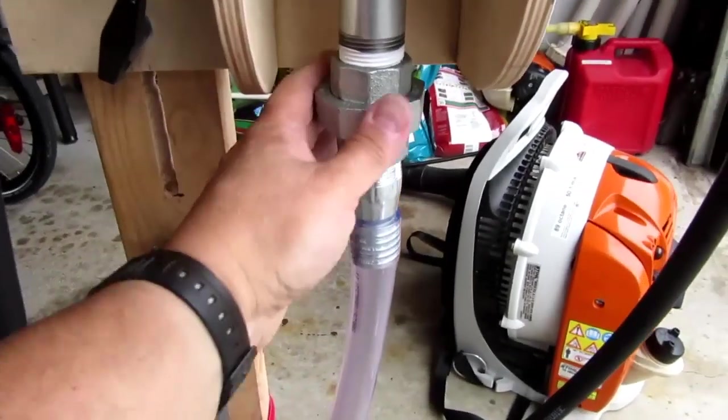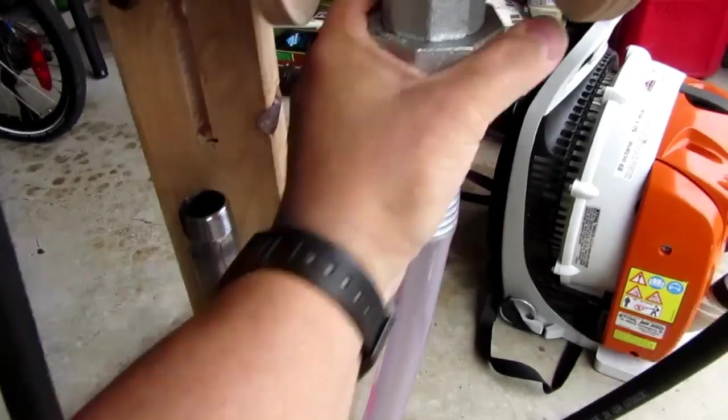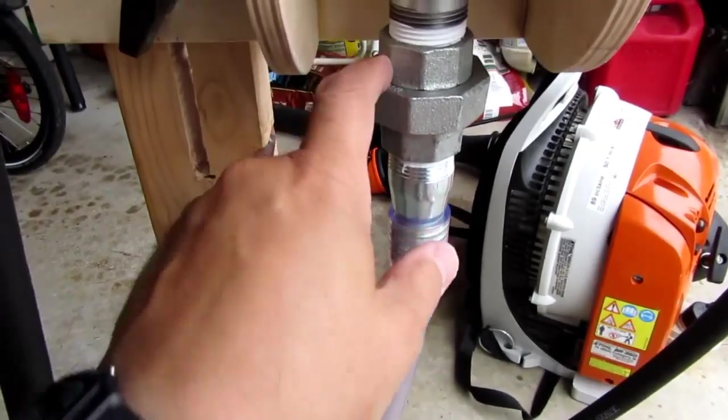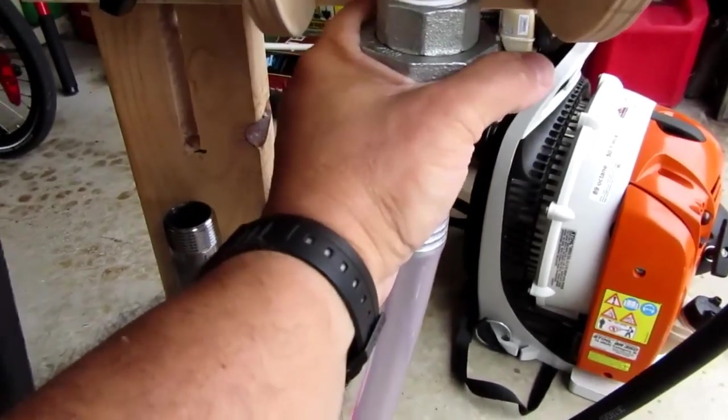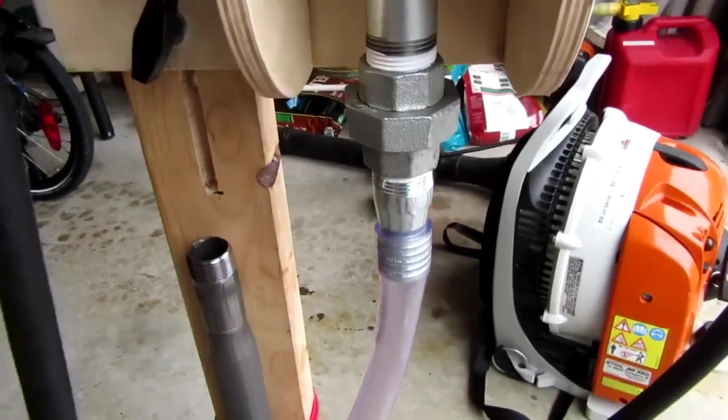Depending where I'm pumping from, I can just loosen the union, swing it around, and then tighten it up again. There should be a good enough seal on that union just finger tight to do most of the pumping I need. I don't think it'll leak that much.